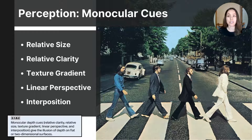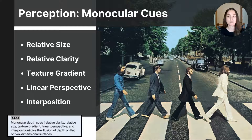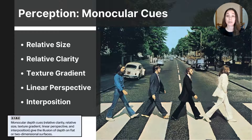Finally, we have interposition — a depth cue that indicates distance as images overlap one another. The object that is partially covered is perceived as being farther away. In the photograph, George Harrison's face slightly overlaps the white Volkswagen, indicating that he's closer to the viewer than the car. These are the five monocular cues you need to know for the AP Psychology exam. Binocular cues are only useful in three-dimensional or real-world settings, whereas monocular cues can be used in real-world settings or when interpreting 2D images like photographs and art.